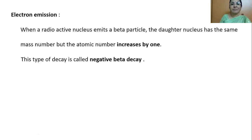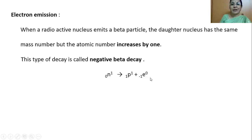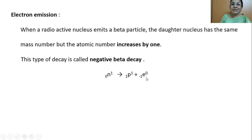In negative beta decay, the daughter nucleus mass number remains the same but the atomic number increases by one. When a neutron gets converted into a proton, an electron is emitted. This electron is called the beta particle. The neutron has charge zero; when it converts to a proton, its charge becomes plus one. To conserve charge, an electron with charge minus one is emitted — plus one minus one equals zero, equivalent to the charge of the neutron.